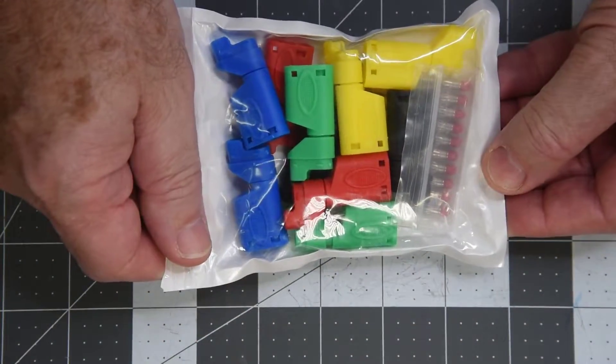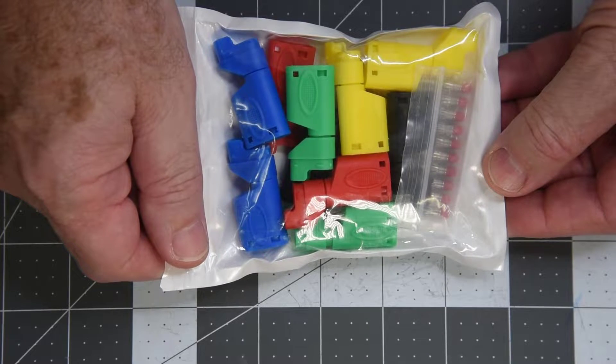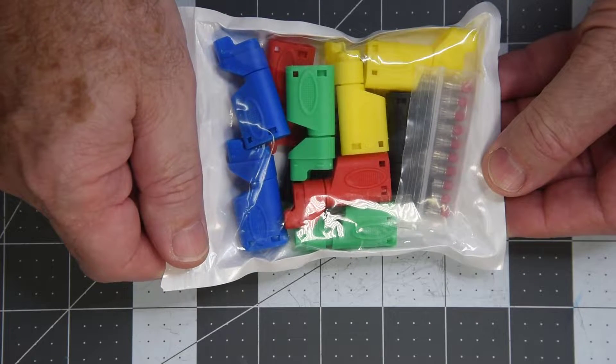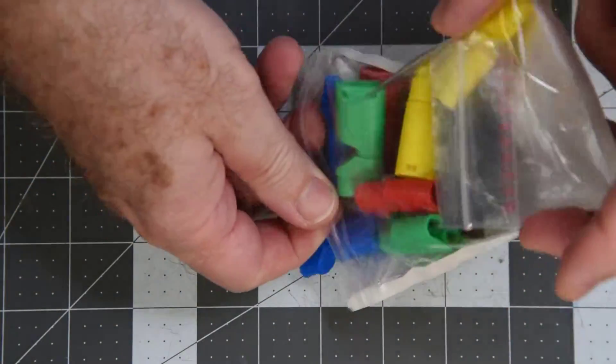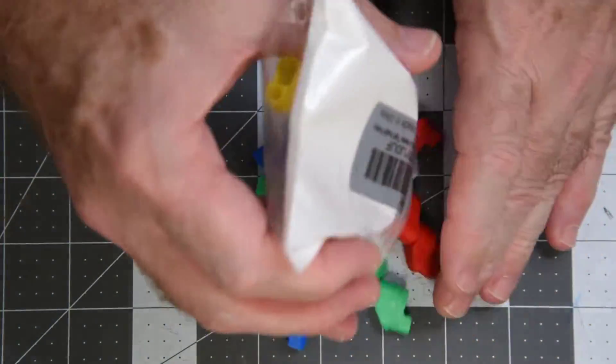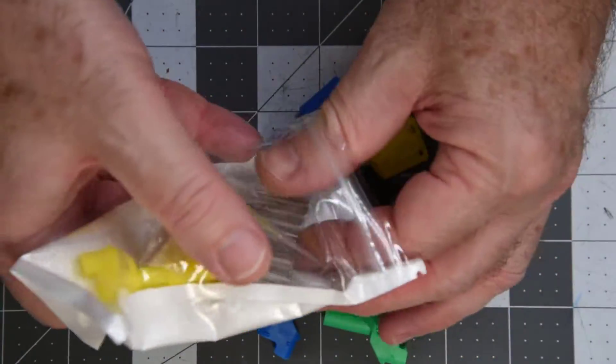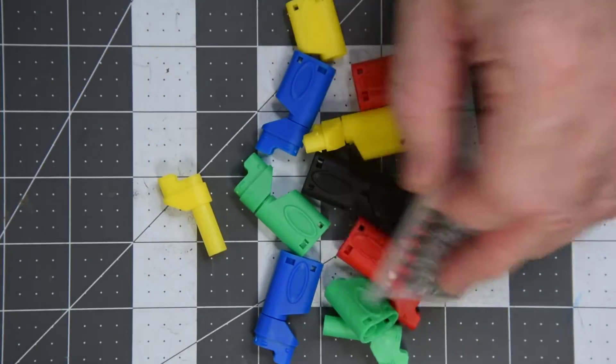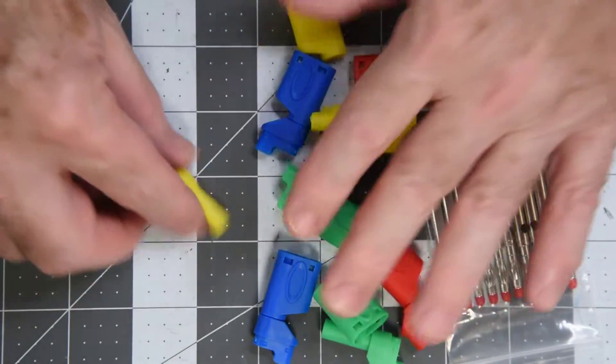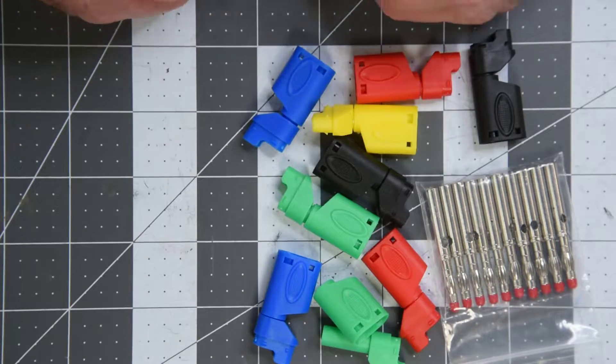This is a 5 color set of 4mm stackable banana plugs. Cost was $12. There are 10 pieces, 2 of each color, so $1.20 a plug. Now these are shrouded banana plugs. The shroud is thin and I've had no problem using them on any jacks made for shrouded plugs. But do a double check and make sure the jacks you are going to plug into can accept shrouded plugs.